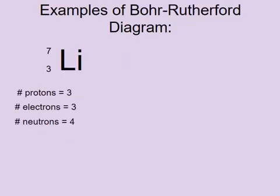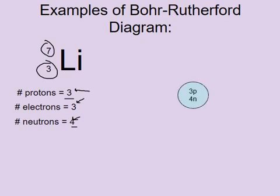Let's take a look at an example. We've got lithium. The atomic number is three and the mass number is four. That gives us three protons, three electrons, which is important, and four neutrons. The first thing we'll do is write our nucleus that contains the three protons and four neutrons, like so.